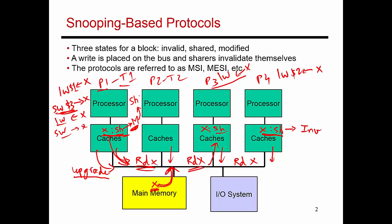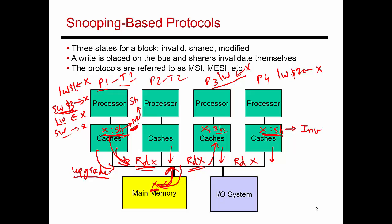When this happens, even main memory picks up the value of X that was on the bus and updates its own copy. This is because when somebody else makes a request for X, memory is responsible for providing the data. So this is the time when even main memory updates its copy — anytime a block goes from modified to shared, a write-back into main memory also happens.